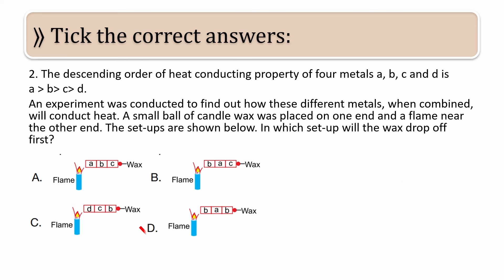Time's up, students. The correct answer is D. In option D, the arrangement is B-A-B. So heat will conduct fastest in D. In options A, B, and C, metal C is closest to the wax. But C's heat conducting capacity is less than B. Only in option D, it has B-A-B arrangement, where heat will conduct through the good conductors first.